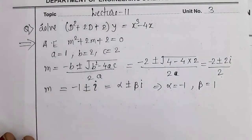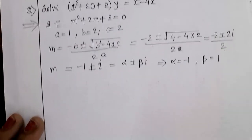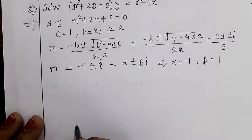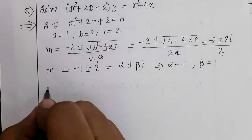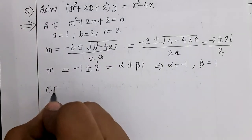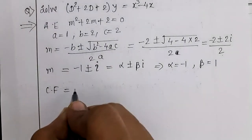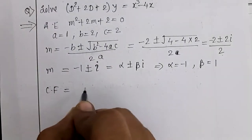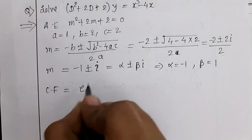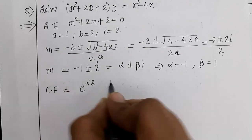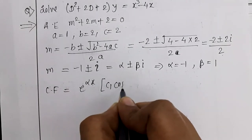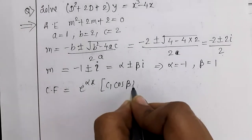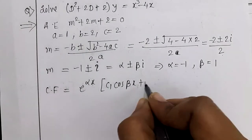We have found the roots. Using these roots, CF can be written as e^(αx) [c₁ cos(βx) + c₂ sin(βx)], which gives CF = e^(-x) [c₁ cos(x) + c₂ sin(x)].